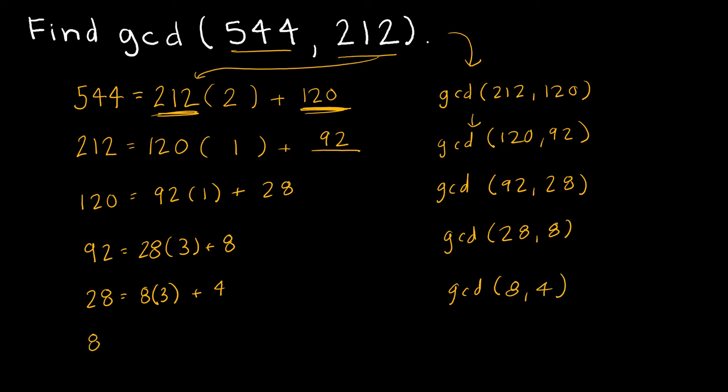Now 8 is equal to 4 times 2 plus 0. So once I get to a remainder of 0, that's when I'm done. So don't get confused. Once I get to a remainder of 0, then I know that I'm done. Now what is the GCD?